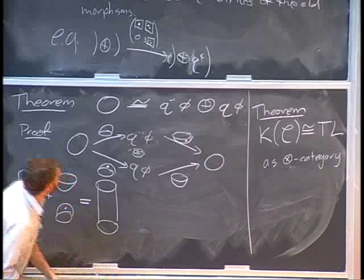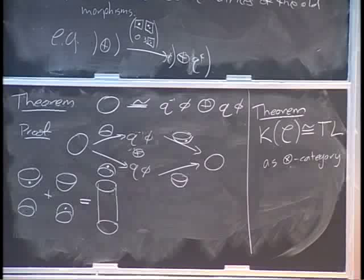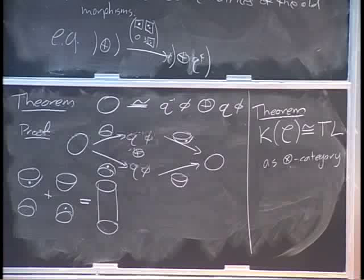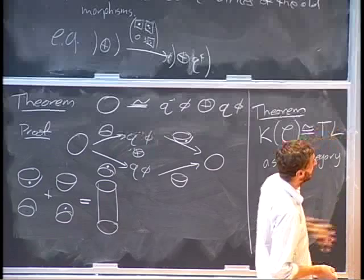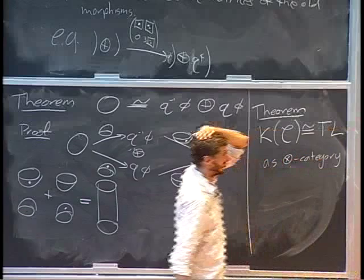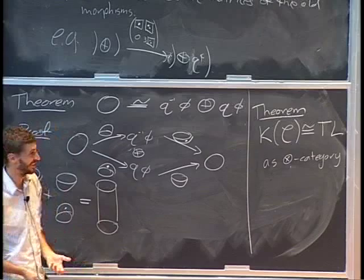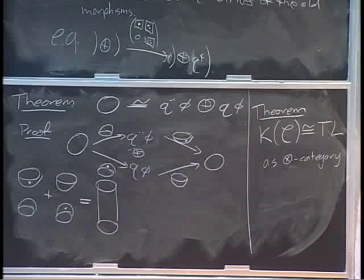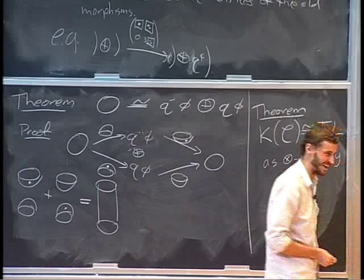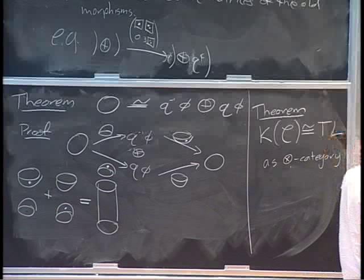Really we want to categorify Temperley-Lieb as a braided tensor category, but there's a problem: the formulas for crossings have negative signs, and it's unclear what object in C we could associate to a crossing, since we can only take direct sums — there are no direct minuses. It's hard to categorify a ring, but easy to categorify a rig. The solution is to go to the homotopy category.